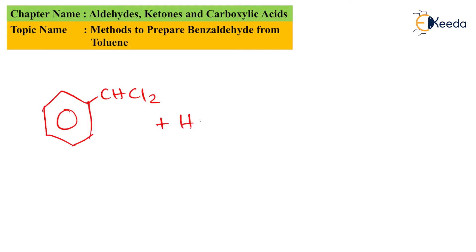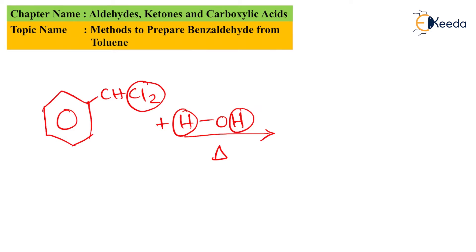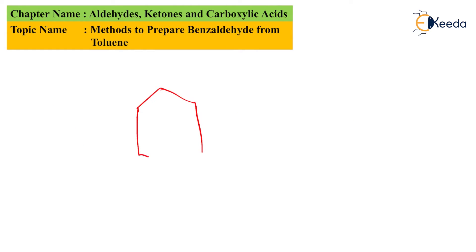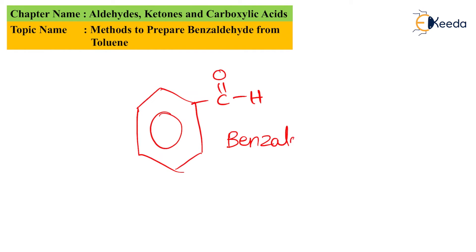We react the benzal chloride with water (HOH) and apply heat. There are two Cl atoms on the CHCl2 group and two hydrogen atoms in the water molecule, so they react with each other to form the byproduct of two moles of HCl. The remaining oxygen atom gets attached to the CH group on the benzene ring, giving a benzene ring with a C=O-H group — which is benzaldehyde.